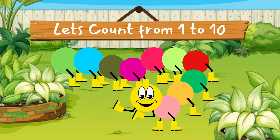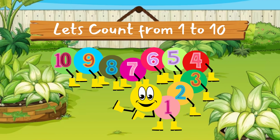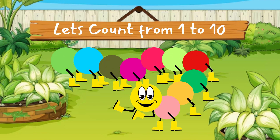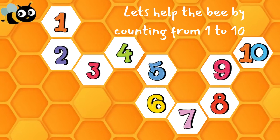Let's count from one to ten. How many segments does this caterpillar have? Let's count — one, two, three, four, five, six, seven, eight, nine, ten. Ten segments! Next we have a game here — let's help the bee by counting from one to ten to go from this side to the other side.